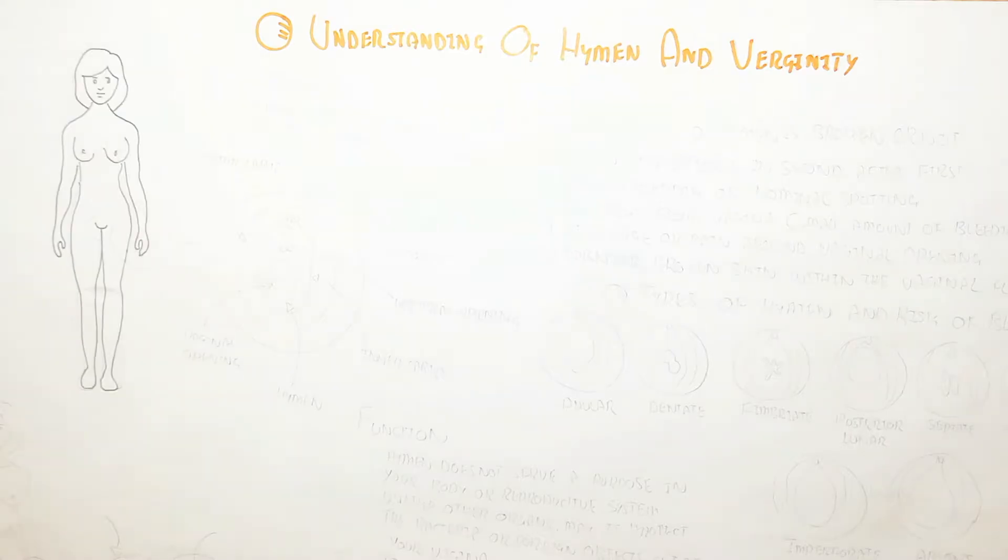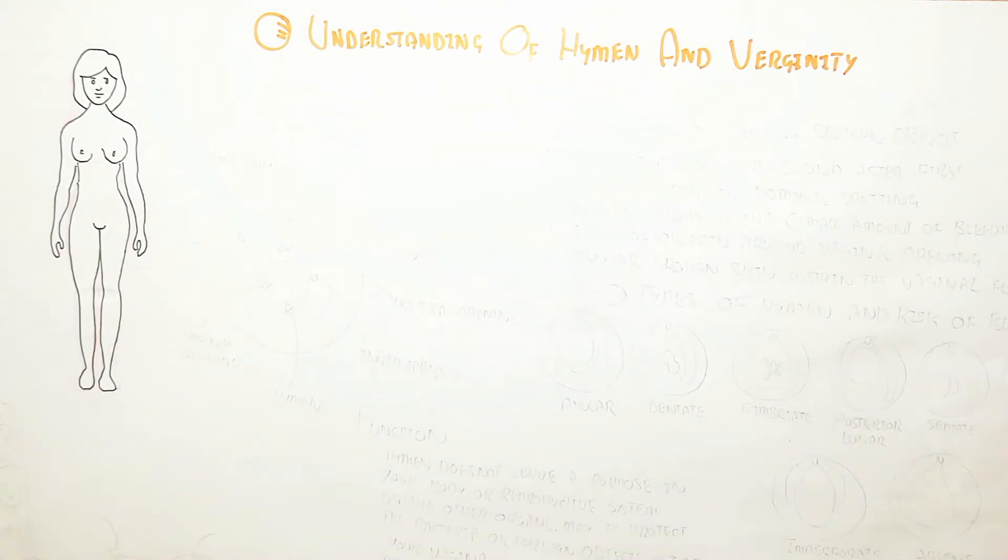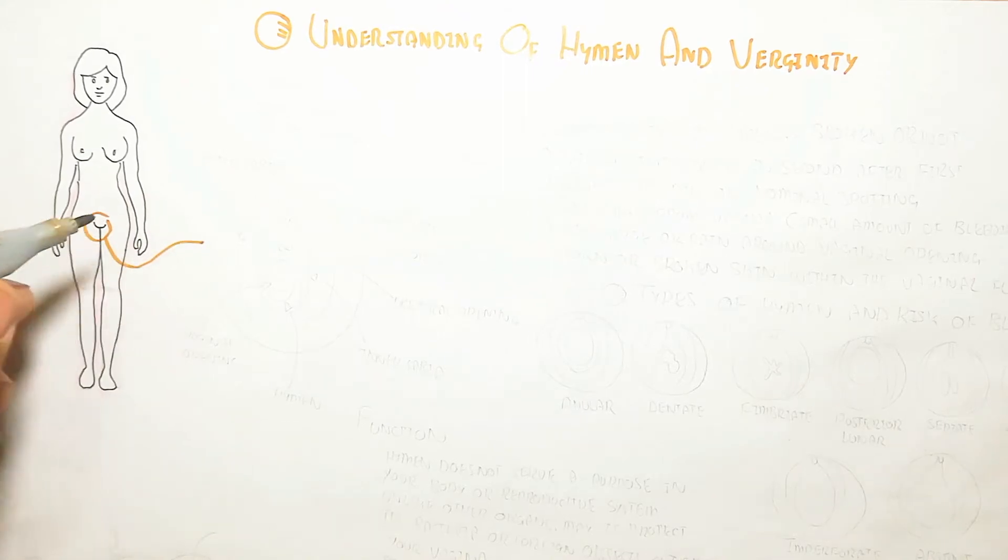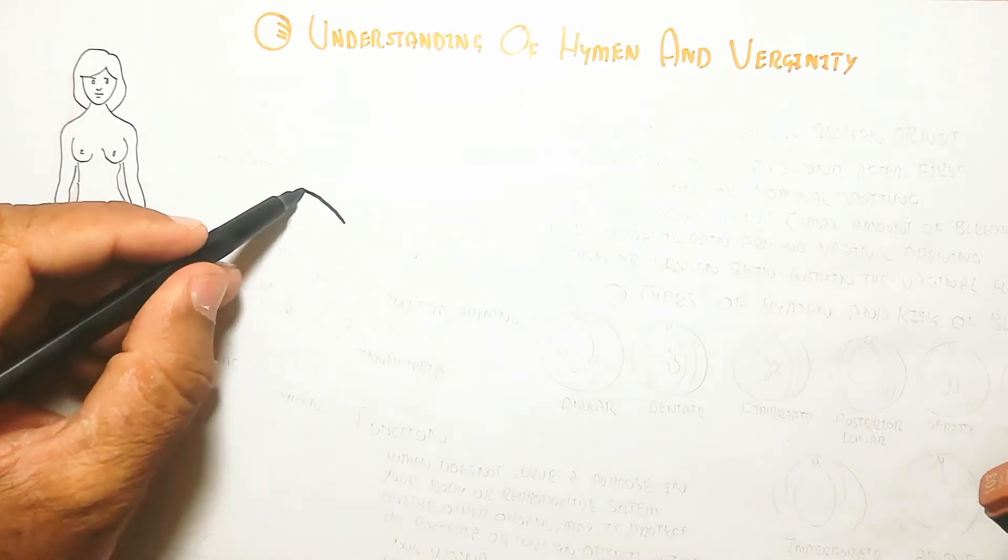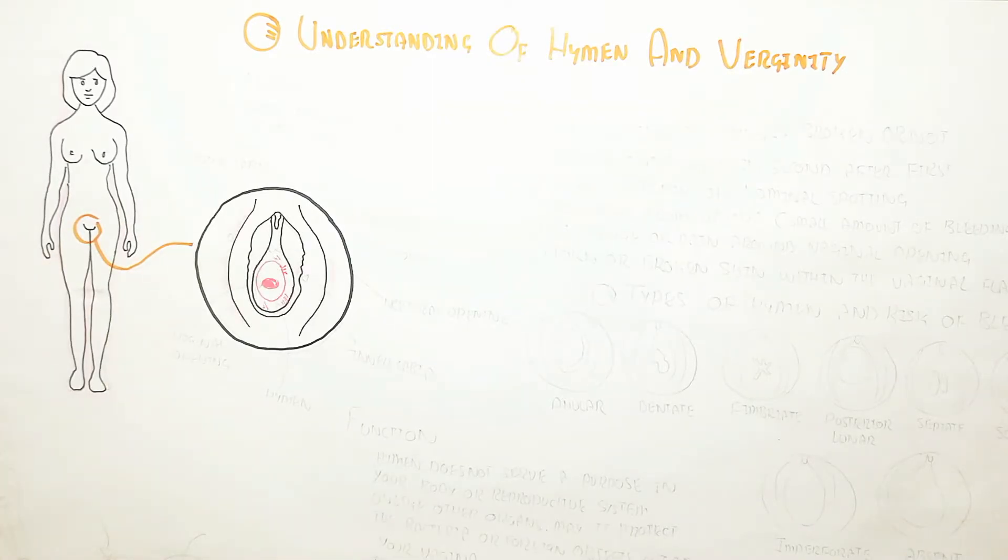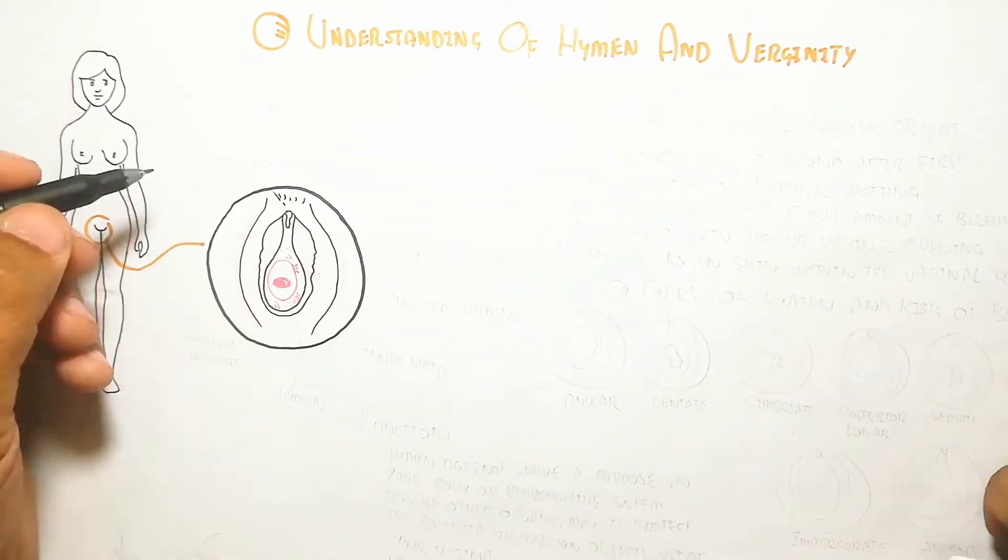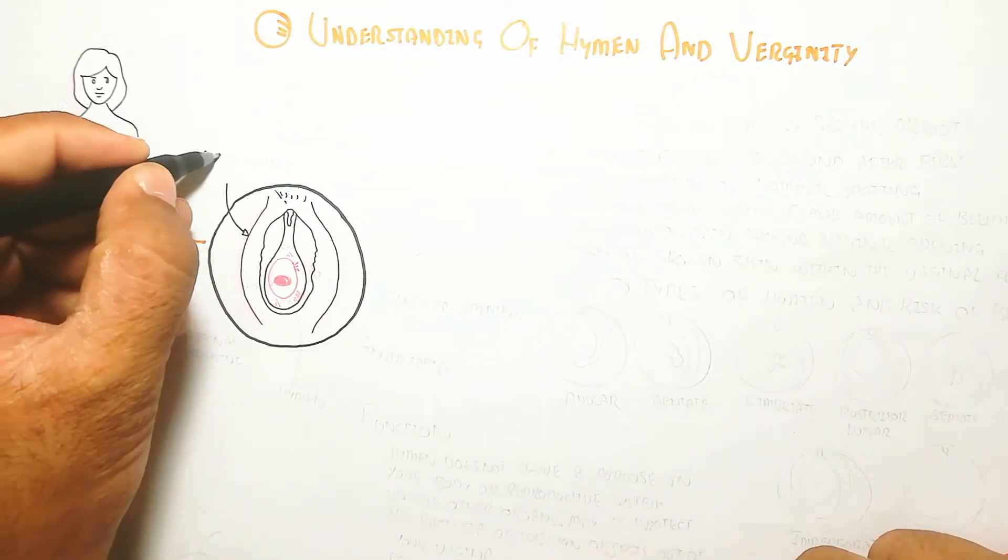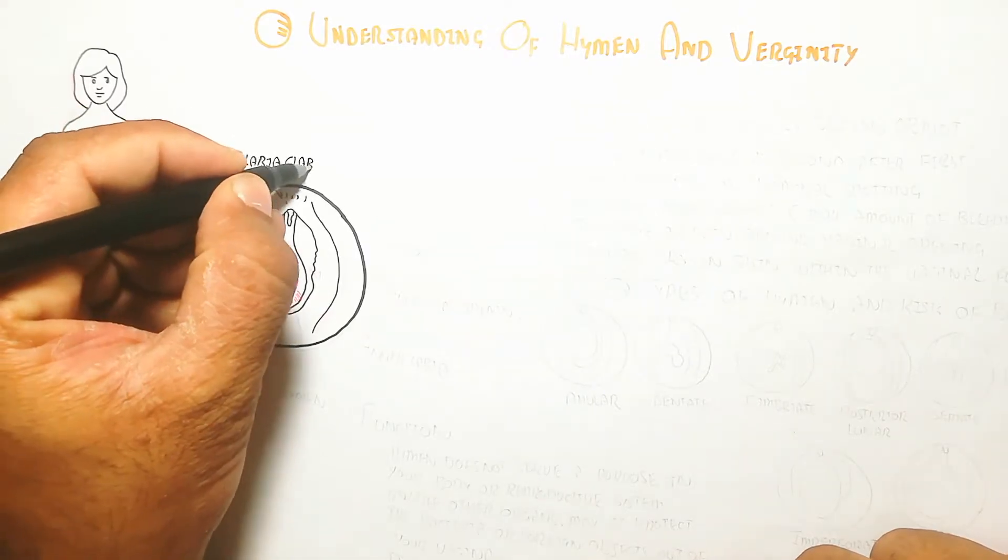This is related to hymen and virginity. This is the female reproductive system, and let's understand their vagina and reproductive system with a labeling diagram. This is the female reproductive system which contains different parts.